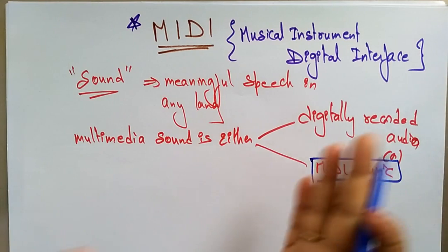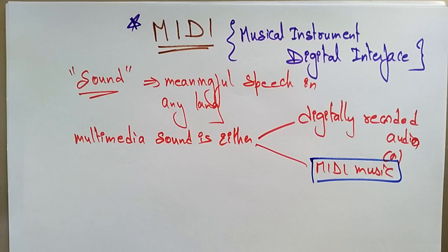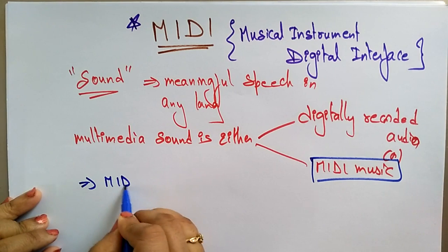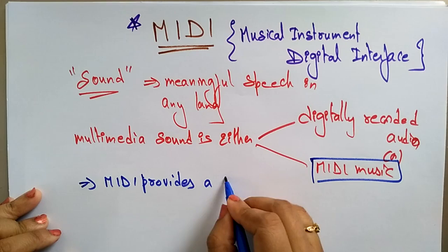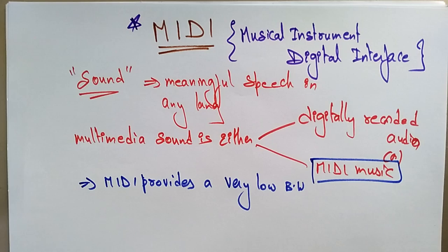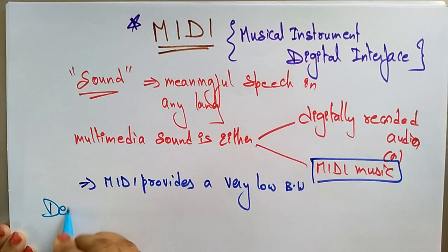MIDI provides a very low bandwidth alternative on the web. You're already aware of digitally recorded audio — recording through a camera is digitally recorded audio. But why use MIDI rather than digitally recorded audio? Because MIDI provides very low bandwidth compared to digitally recorded audio. It transmits musicals and certain sound effects.